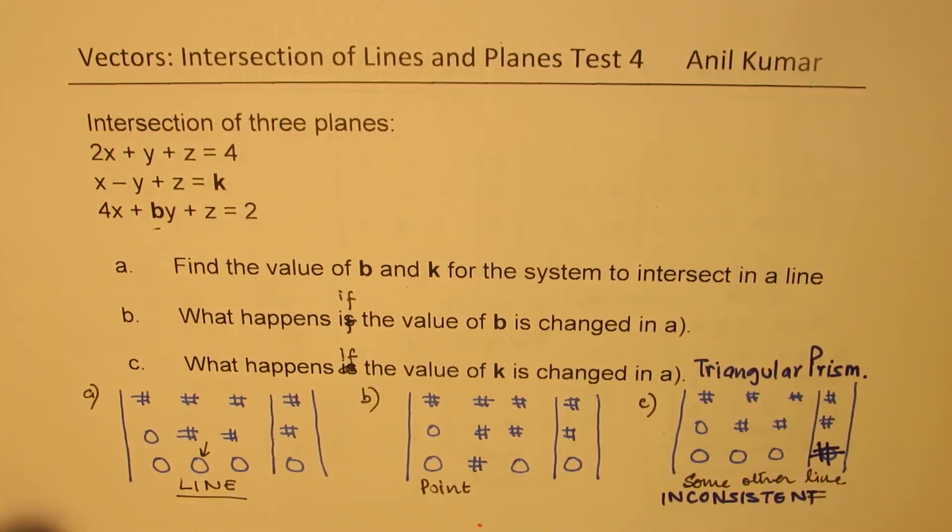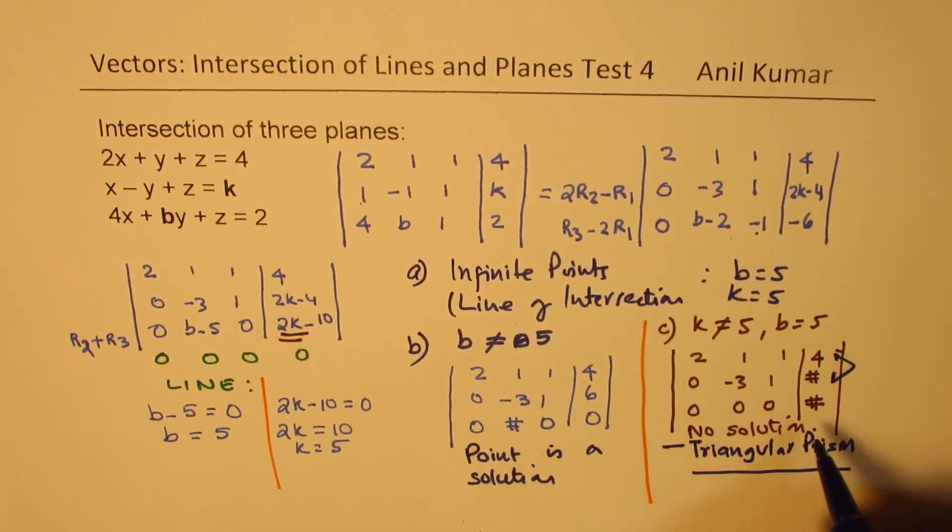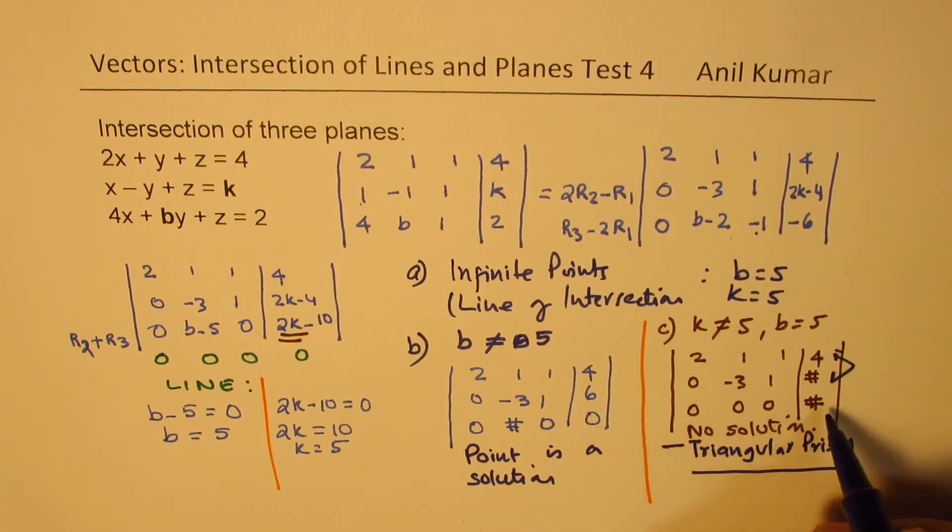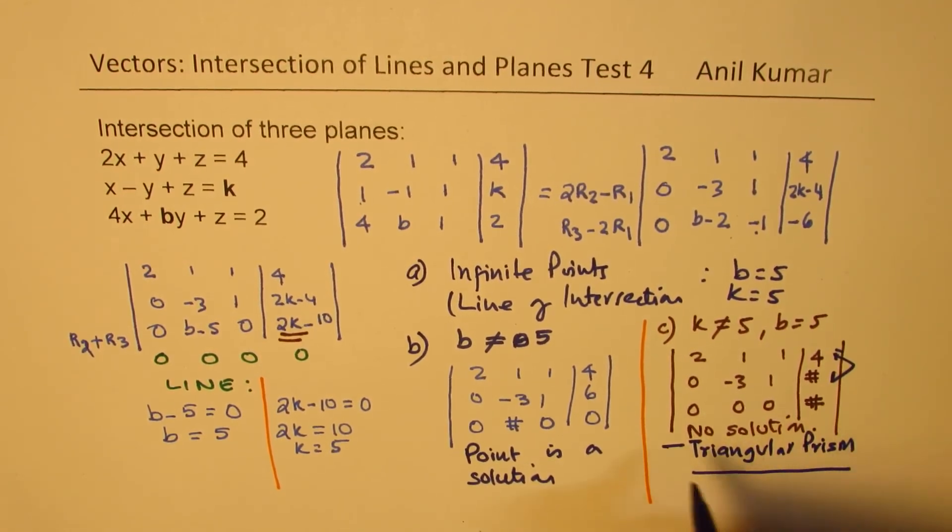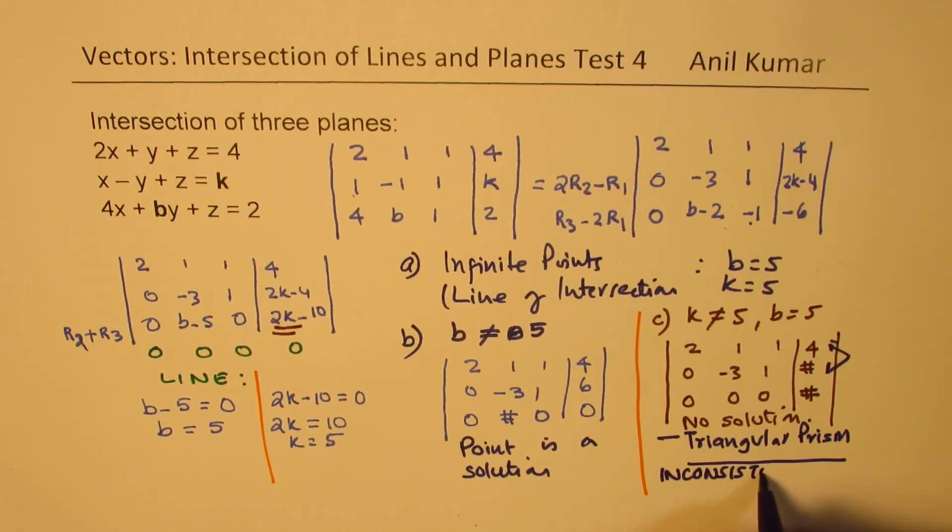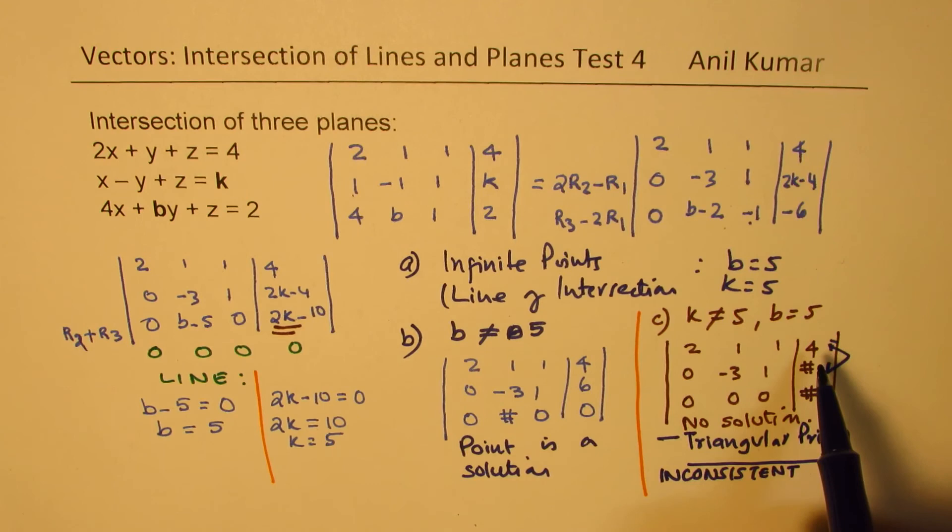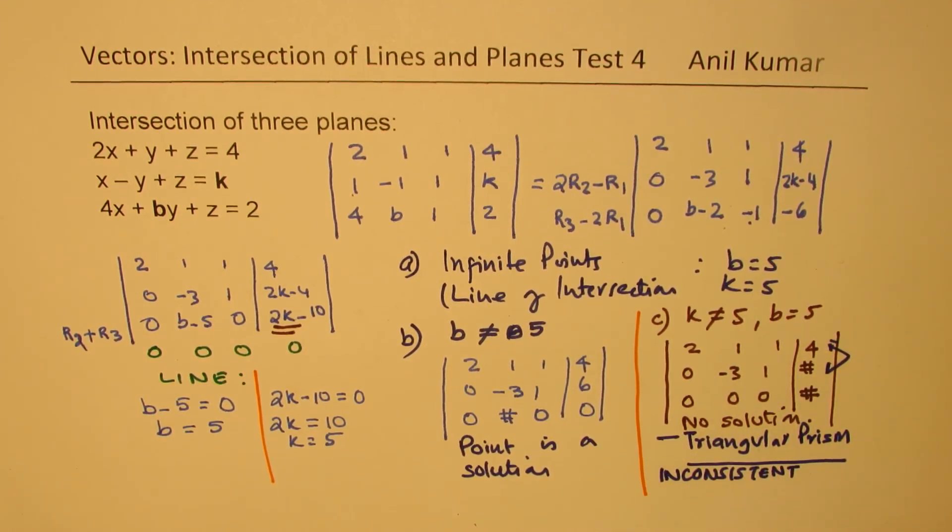As we have seen very clearly, since we have k here at the end, and so we have 0 is equal to some number, which is not possible. So the system is inconsistent. So it is inconsistent. So two planes will intersect in the line, but third one will intersect in a different line. You get the idea. So it looked like a triangular prism.